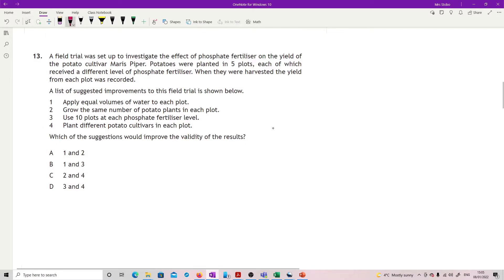Question 13: A field trial was set up to investigate the effect of phosphate fertilizer on the yield of the potato cultivar Maris Piper. Potatoes were planted in five plots, each receiving a different level of phosphate fertilizer. A list of suggested improvements is shown: apply equal volumes of water, grow the same number of potato plants, use 10 plots at each phosphate fertilizer level, and plant different potato cultivars in each plot.